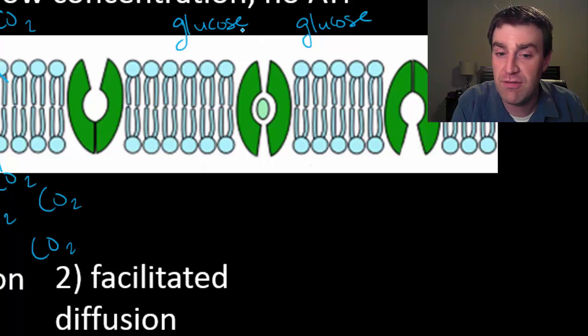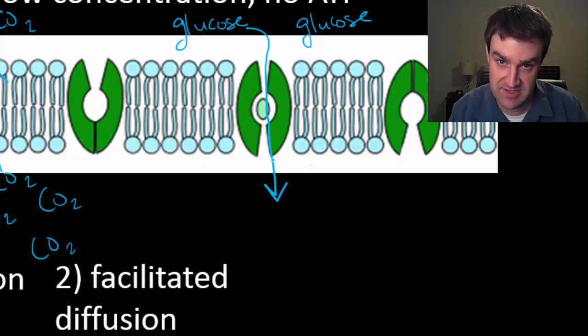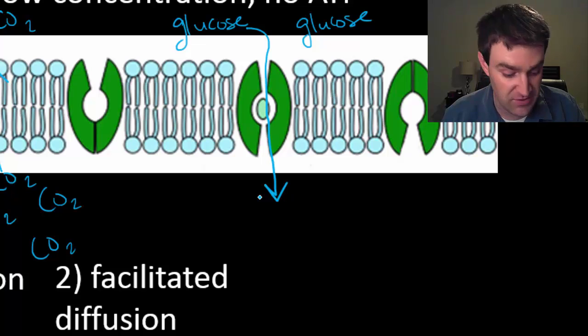So maybe that glucose would be moving through passive transport through a transport protein from its high to its low concentration gradient through facilitated diffusion.